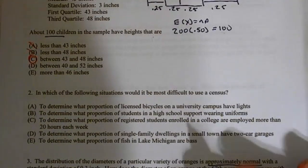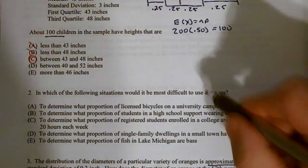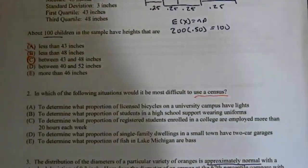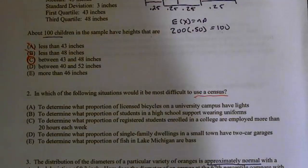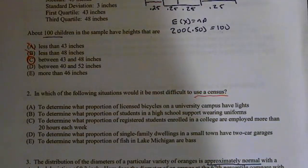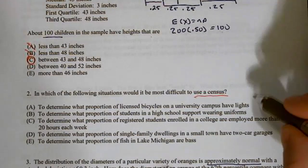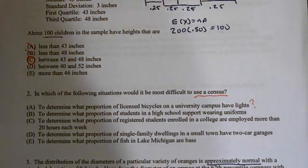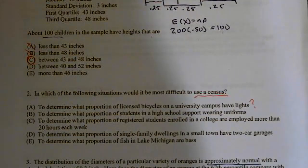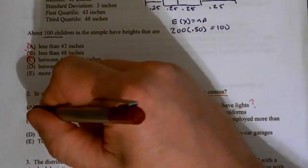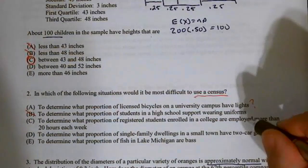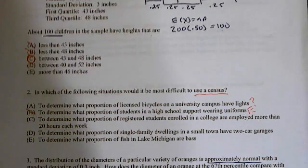Which of the following situations would be most difficult to use a census? Well remember, a census is difficult when we have a very large population, or a population that's difficult to get a hold of. Small populations, a census works well. If I want to count everyone in my classroom, not a big deal, because I know how many students. To determine what proportion of licensed bicycles on a university have lights? That sounds a little bit difficult because it could be a large university and bicycles move around, but maybe. To determine what proportion of students in a high school support wearing uniforms? That one I'm pretty sure is wrong, I'm pretty sure that one's easy.